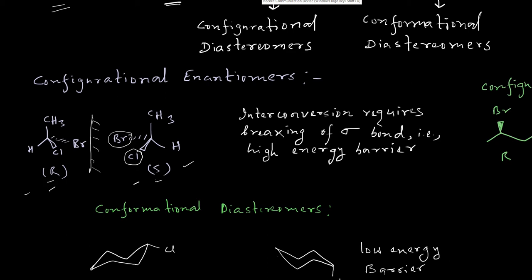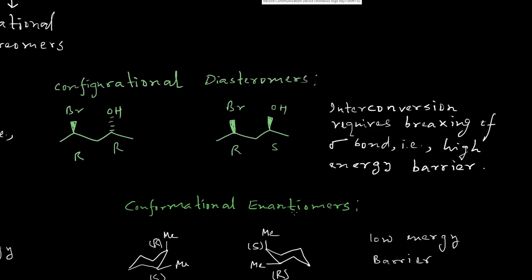Now if we consider a configurational diastereomer situation, we have two molecules. These two molecules do not have any mirror image relationship with each other, and they are not superimposable. So these two are diastereomers. The absolute configurations can be assigned using priority rules — for instance, following the 1, 2, 3 clockwise rotation gives R, and all stereocenters are designated in this fashion.